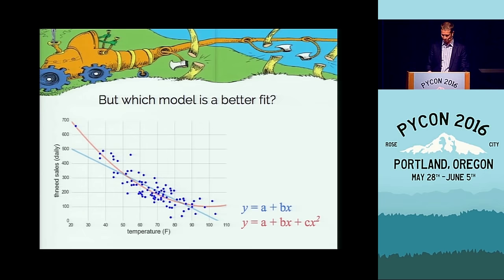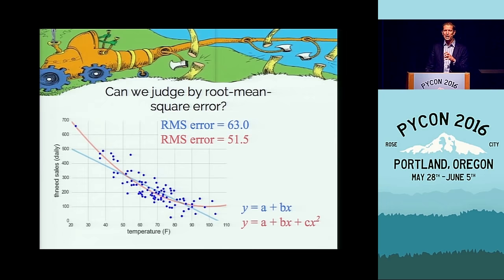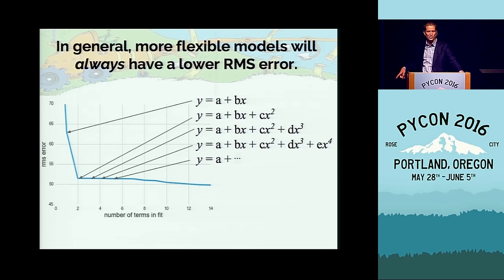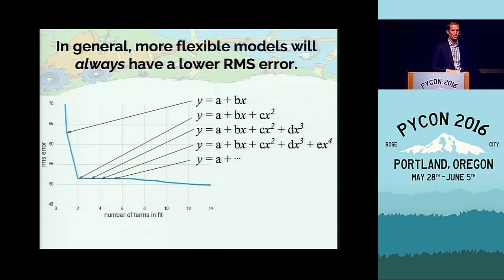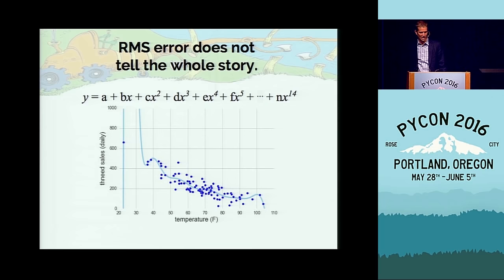You might think: just measure how close the points are to each model using root mean square error. The linear model gives 63, the quadratic gives 51. But you have to be careful — the red model is more complicated, and a more complicated model will nearly always fit the data better. If we go to cubic, quartic, or higher, the RMS error gets better and better forever — until we have as many terms as data points and fit the data perfectly. These higher-order models look silly: at 20 degrees, it predicts zero thneed sales.